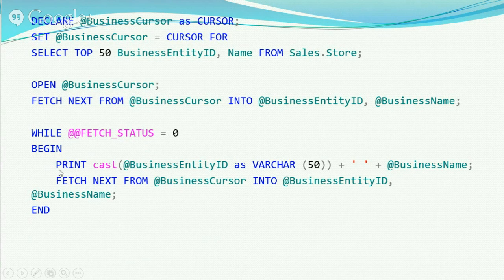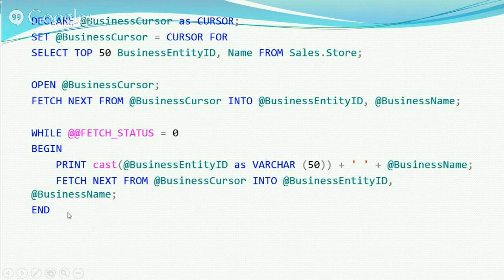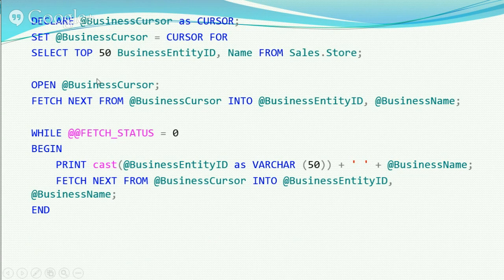Inside the while loop, I'm using the print command to print out the business entity ID and business name, casting to varchar and concatenating them. You could instead run an update statement, another select statement, or a stored procedure based on the values looping through. At the bottom of the loop, use that same fetch next command to get the next row. Each iteration fills the business_entity_id and business_name variables with whatever columns were specified in the original select statement.